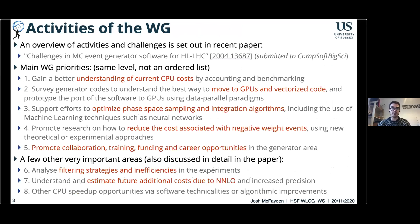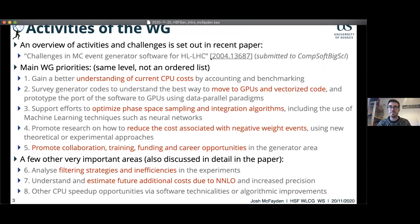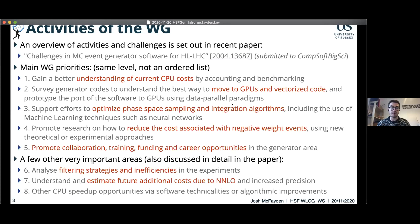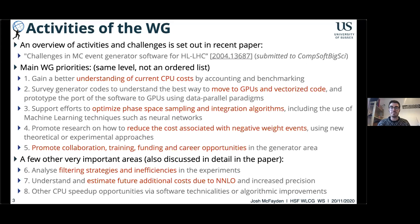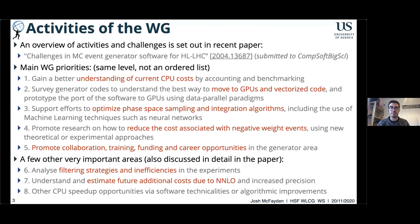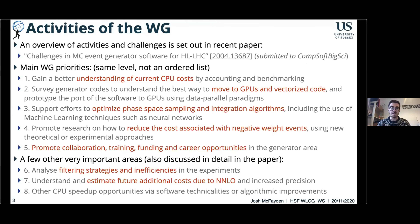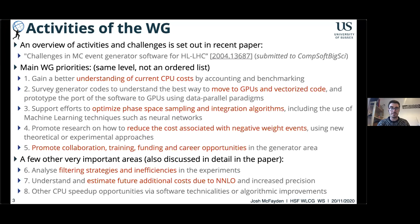To briefly overview the working group's activities: we have a paper submitted to Computing and Software for Big Science containing the current state and focus areas. These include understanding the current CPU costs better, moving to GPUs and vectorized code, optimizing generator internals such as phase-space sampling and integration algorithms, reducing costs associated with negative weight events, and promoting this work to get better training, funding, and career opportunities for people. There are also important areas related to filtering strategies and export inefficiencies in experiments.